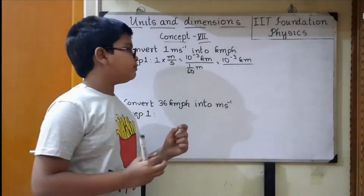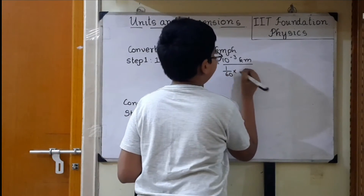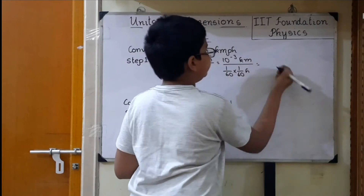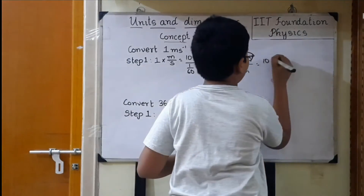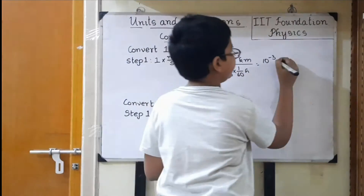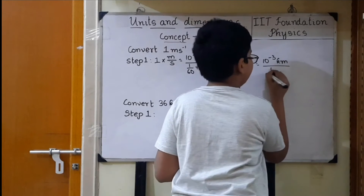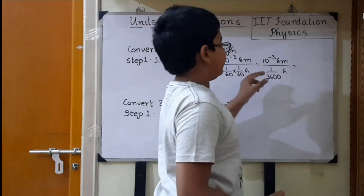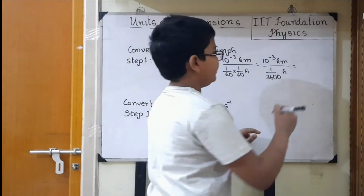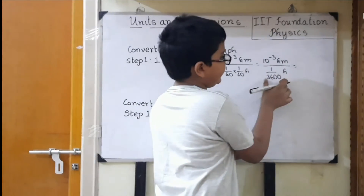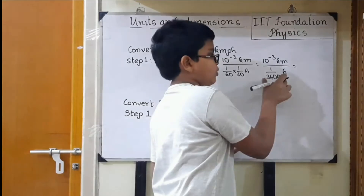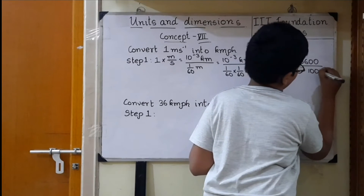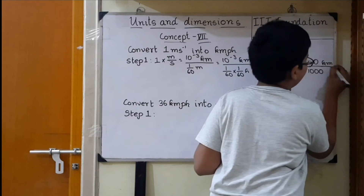And 1 minute equals 1 by 60 hours, so 1 second equals 1 by 60 into 1 by 60 hours, which is 1 by 3600 hours. So we have 10 power minus 3 kilometers divided by 1 by 3600 hours. Bringing 10 power minus 3 to the denominator gives 10 power 3, and bringing 3600 to the numerator gives 3600 divided by 10 power 3, which equals 3600 by 1000 kilometer per hour.